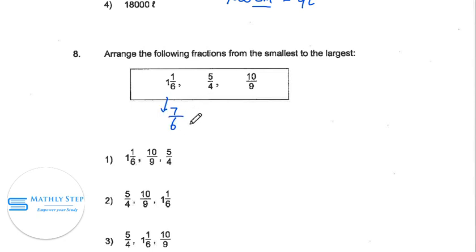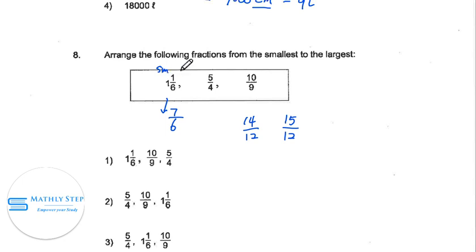And we compare 2 by 2. So first we compare this and this. The common multiple is 12 for the denominator. So this will be 12, 14. This will be 12, 15. So after comparing this, we know this is small. This is large.